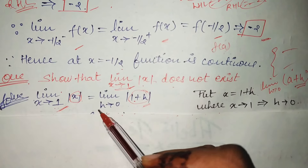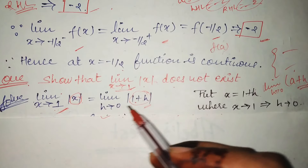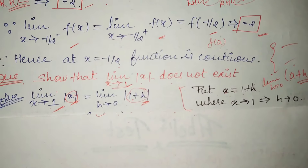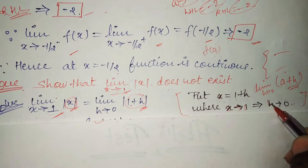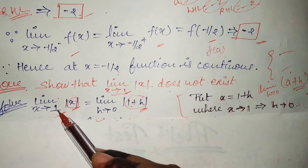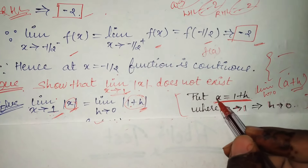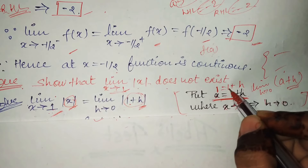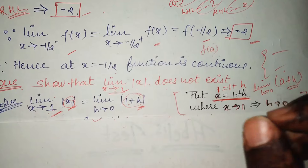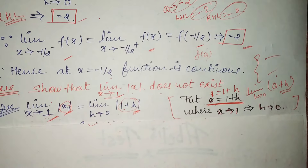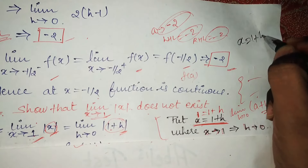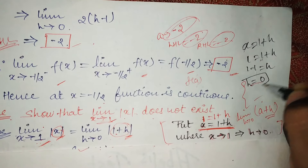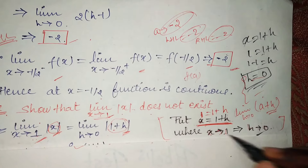If mod were not given, we would write the minus/plus notation separately. Now, x = 1 + h. Since x tends to 1, h tends to 0. This is because substituting x = 1 into x = 1 + h gives 1 = 1 + h, so h = 0. That is why we write: if x = 1, then h = 0. Now, 1 + h is written in both minus and plus form to remove the mod.